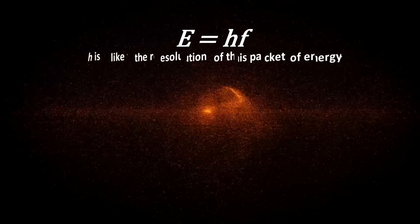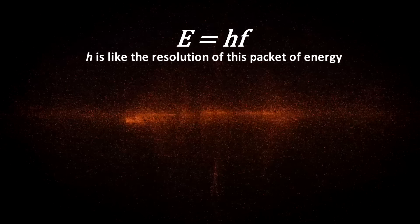This equation might look simple, but it tells us something profound about nature. It shows how a particle represented by the energy it carries is really just a wave packet. Planck's constant h is like the resolution of this packet of energy. But how can a particle be a wave? What does this mean? And what makes us so sure that this is the case? That's coming up right now.